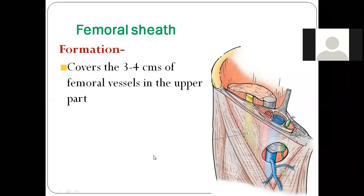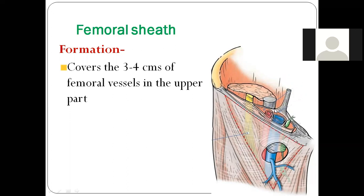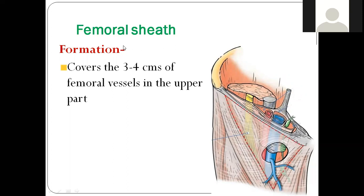How much did we do? Front of the thigh, we have started it, right? So I think we have done the femoral triangle boundaries. After that, we were talking about the contents — femoral artery, vein, and femoral nerve. I told you the upper few centimeters of the femoral vessels are covered with a protective sheath.